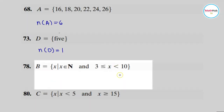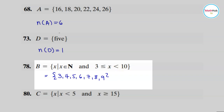For number 78, it helps to write the set in roster form. The set of natural numbers greater than or equal to three but less than ten: starting at three because of the equality sign, we list three, four, five, six, seven, eight, nine — ending at nine since 10 is not included. Counting the members: one, two, three, four, five, six, seven — so the cardinality of B is seven.